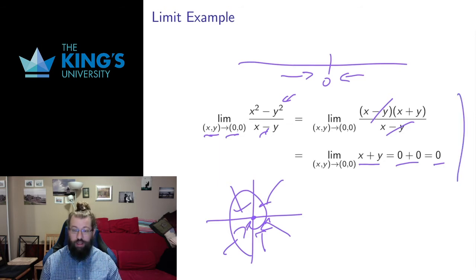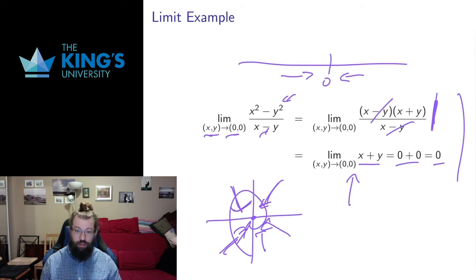This type of algebraic technique, which we were pretty familiar with for single variable limits, still works. If there's some algebra we can do to simplify the expression and get a limit that we can just straightforwardly evaluate, that still works. That covers all the possibilities of direction of approach because this calculation doesn't change depending on which direction you approach. This calculation holds for all possible directions of approach.